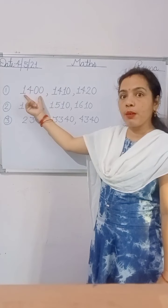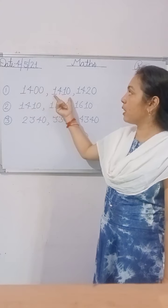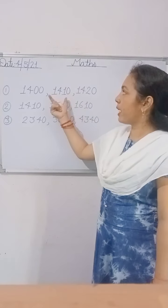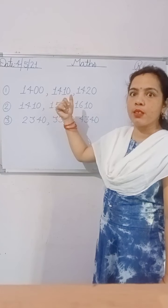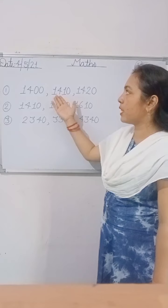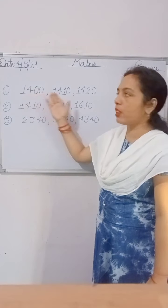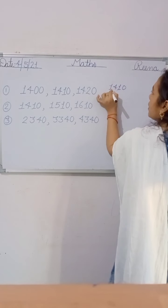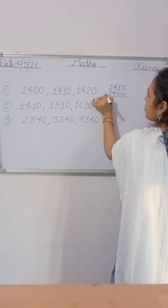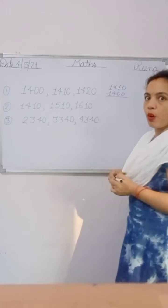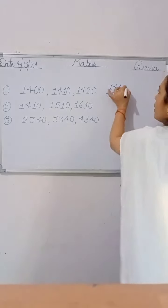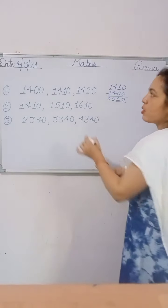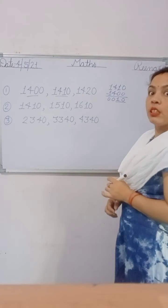Here, the left side number is 1400 and the next number is 1410. For finding the gap, we subtract our numbers. Since the right side number is greater and the left side number is smaller, we subtract 1400 from 1410. Here, 0 minus 0 is 0, and the difference of the two numbers is 10.